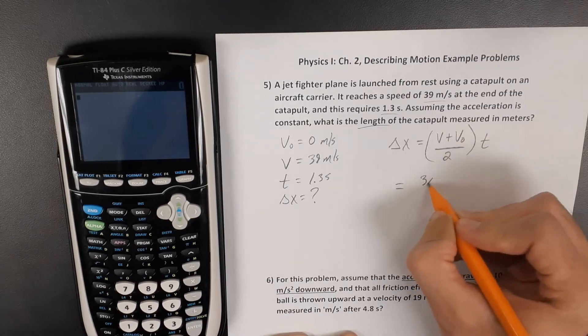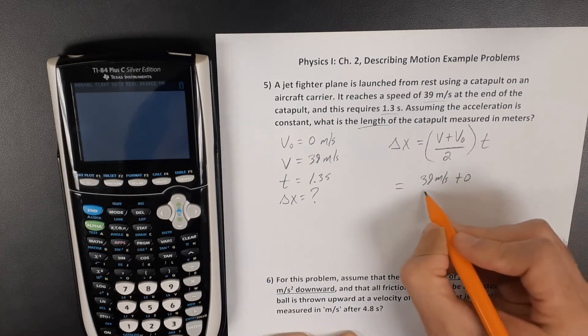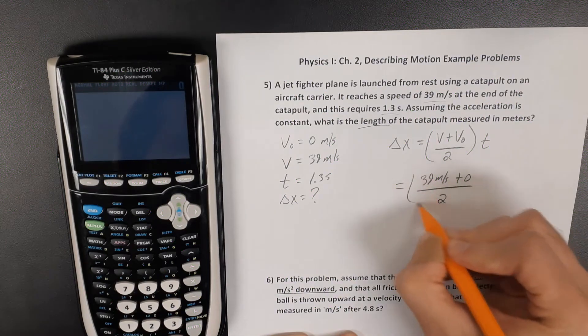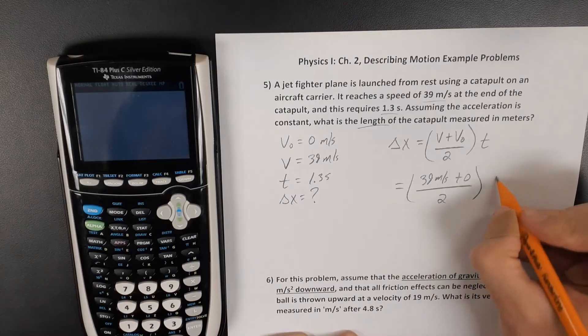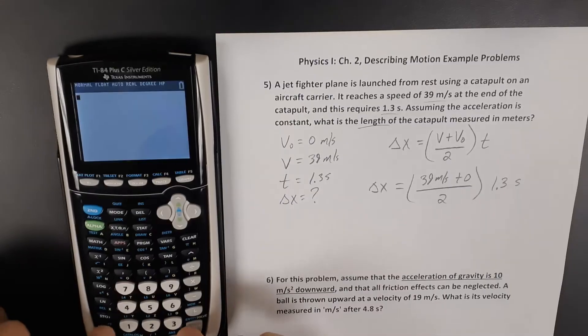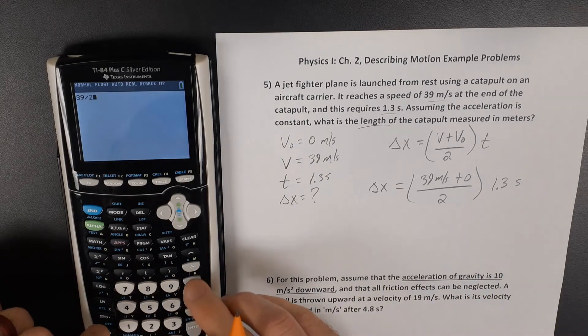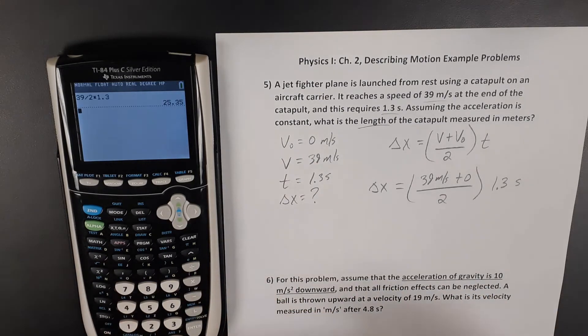So if our final speed is 39 meters per second plus our original zero, that's being divided by 2. And then multiply that times our 1.3 seconds. So 39 divided by 2, then multiply times 1.3.